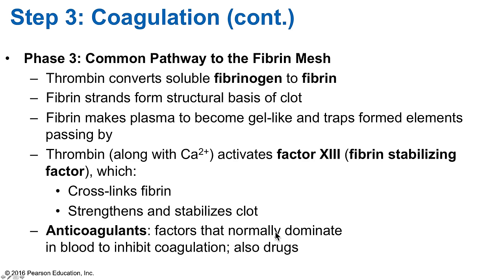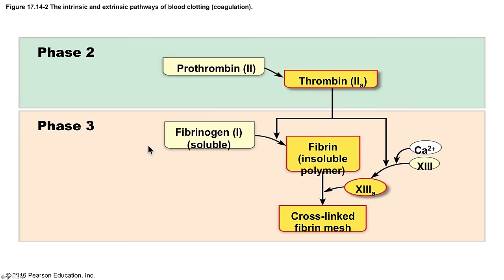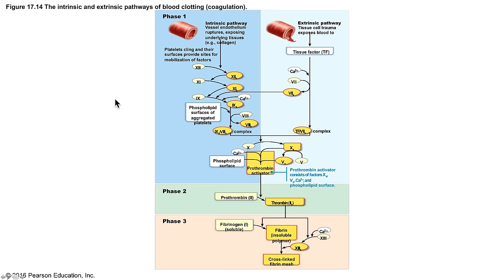Anticoagulants normally dominate in the blood to inhibit coagulation. When there is vessel damage, the balance shifts — more clotting factors become active and fewer anticoagulants are present at the site, allowing coagulation to occur. Anticoagulants can also be administered as drugs — examples include heparin and warfarin. A slide shows thrombin converting soluble fibrinogen into insoluble fibrin; with the addition of thrombin and calcium, factor 13 is converted to factor 13a, which forms fibrin monomers into fibrin polymers, creating the fibrin mesh.